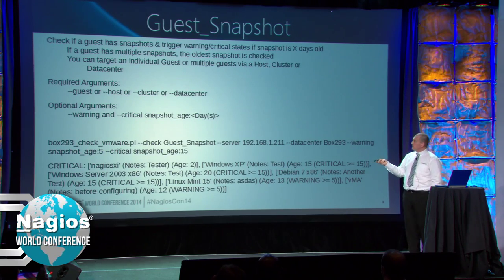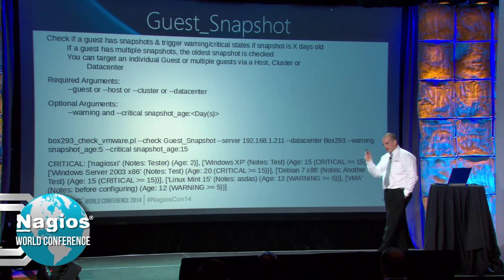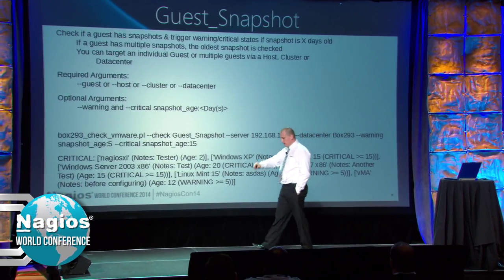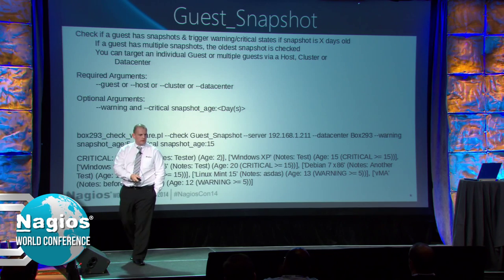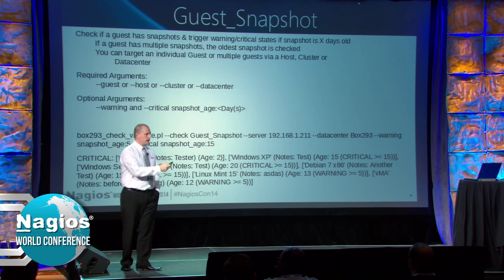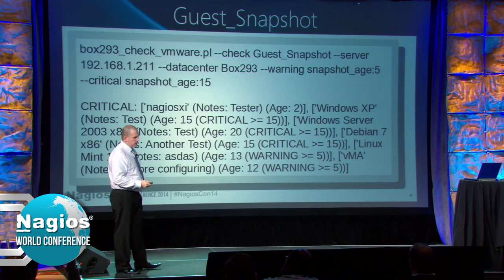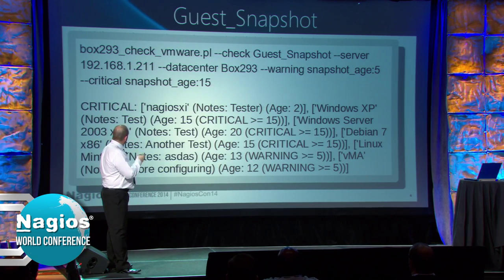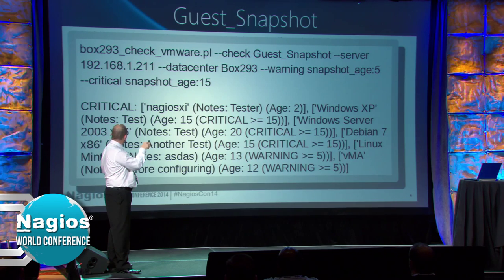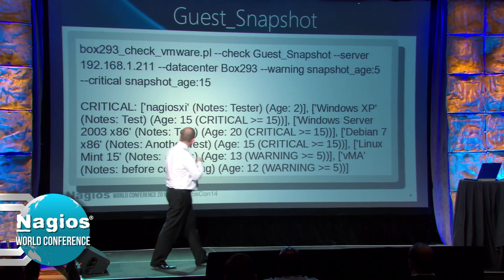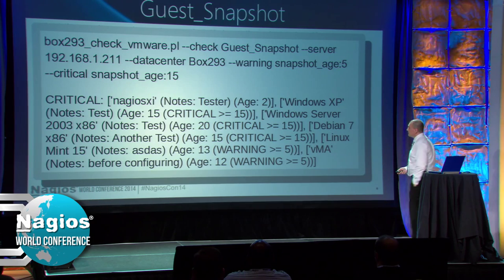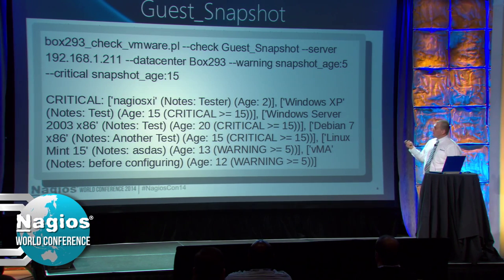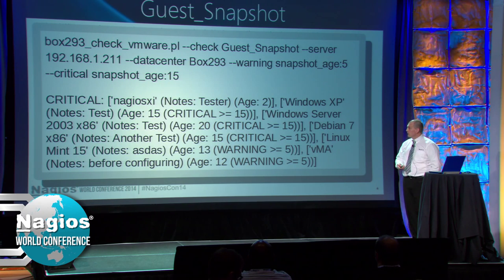Snapshots - this is one of the very few checks that will gather all of the items in the cluster. It will find all the guests if they're in a cluster, or you could target a data center, a host, or just one guest. In this case we're looking at the data center, our warning is five days old and our critical is 15. We have some machines with snapshots more than 15 days old and some more than five days old.